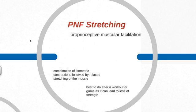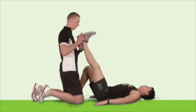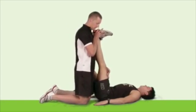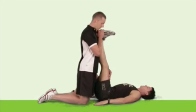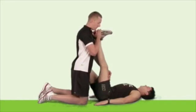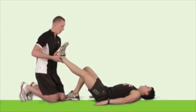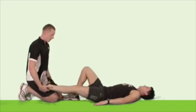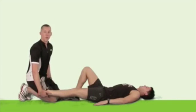The next type is PNF stretching, or by its full name, proprioceptive muscular facilitation. PNF stretching is best done with a partner, as you can see in this video example. The partner pushes the leg to a point of mild discomfort for the person being stretched and holds that position for about 10 to 20 seconds. The muscle is then relaxed slowly back to its normal range of motion, and the process is repeated.